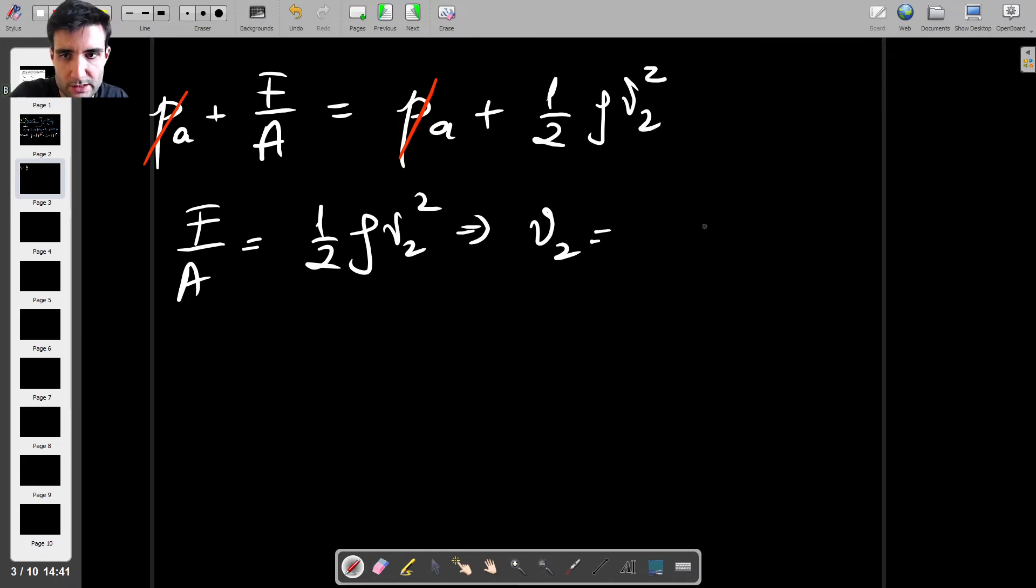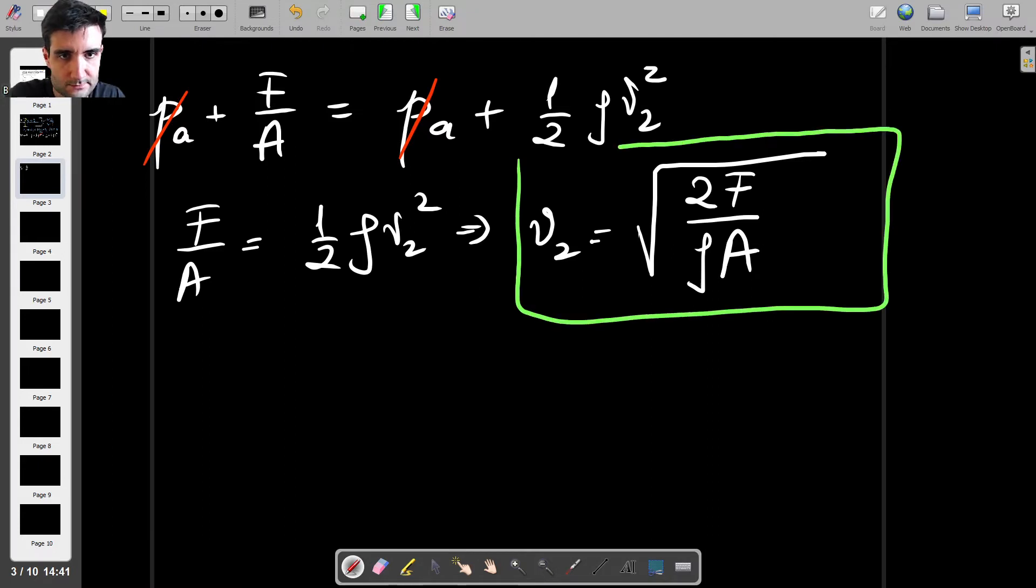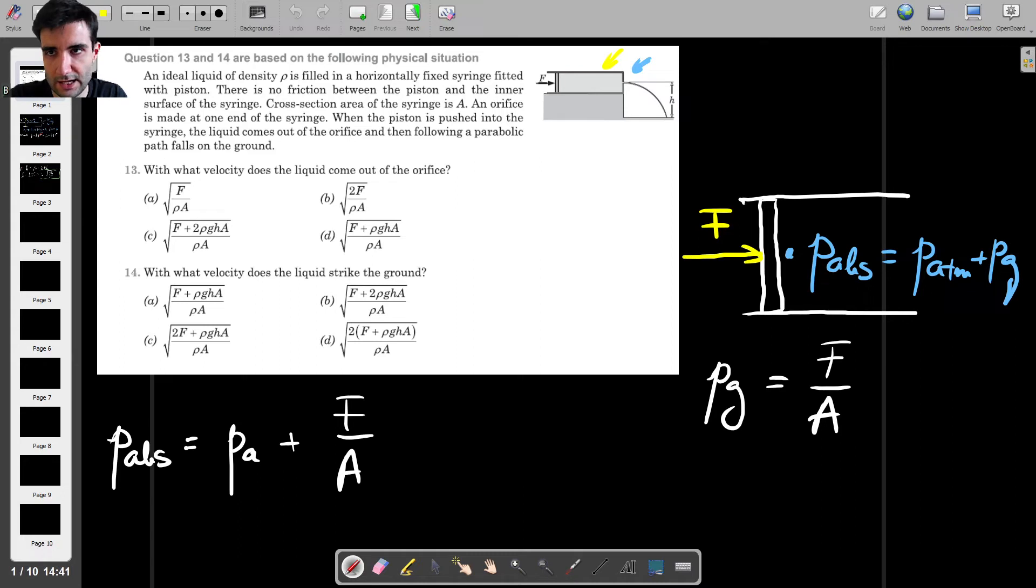And what we get is F over A is one-half rho V2 squared. So V2 will be equal to the square root of, let's see, so 2F divided by rho capital A. And that's it. Obviously we don't have numbers, but this is how the velocity depends on the force applied as well as the cross-sectional area of the tube of the syringe of the cylinder as well as the water density. So square root of 2F over rho A is actually P. So this is the correct answer for question 13 in this case.